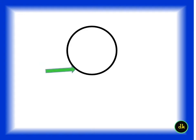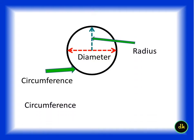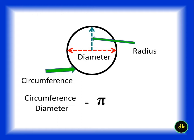Circumference is the outer side of a circle. Showing diameter and radius. Circumference divided by diameter is equal to Pi.